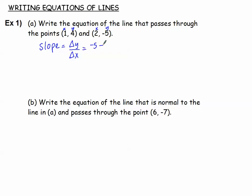y is negative 5 and y is 4. Subtracting the x coordinates, x is 2 and x is 1. Notice we started with the second point both times. Negative 5 minus 4 is negative 9 over 1, so our slope is negative 9. Then we pick one of the points.